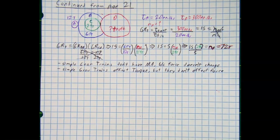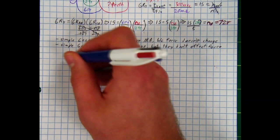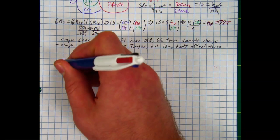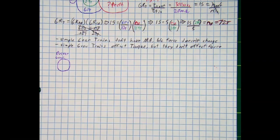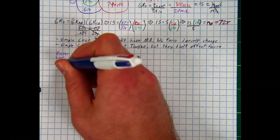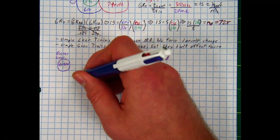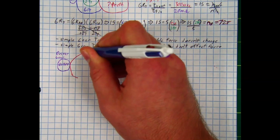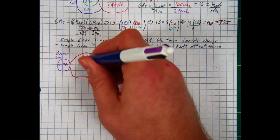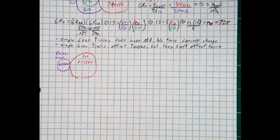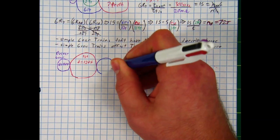To show what I mean, let's draw a simple gear train. We'll start with a driver gear — let's say this driver gear has a diameter of 4 feet. This is a simple gear train, not a compound gear train. The driver gear is turning our first gear, and let's say this first gear has a diameter of 12 feet.